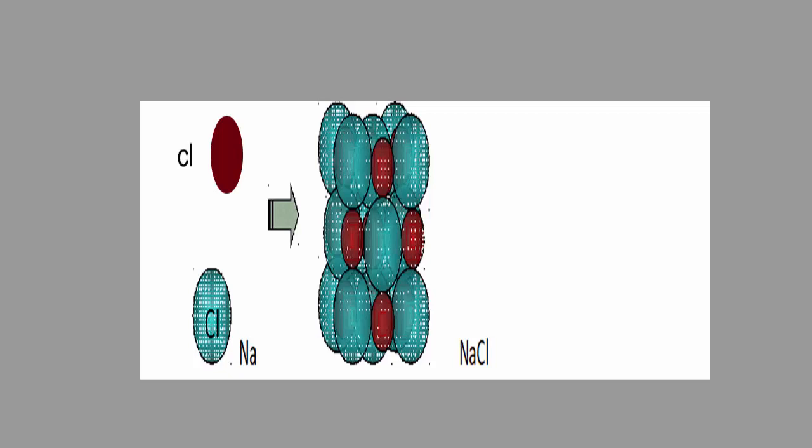Sodium chloride is more stable than a collection of free sodium and chlorine atoms. Germanium crystal is more stable than a collection of free germanium atoms.